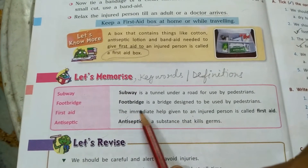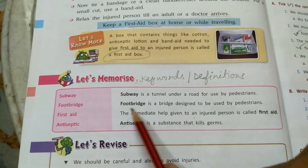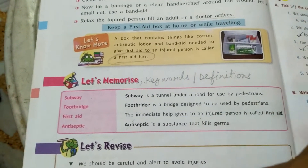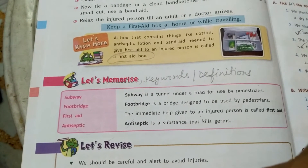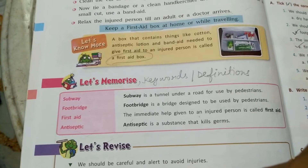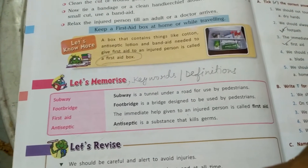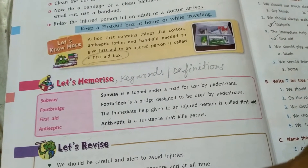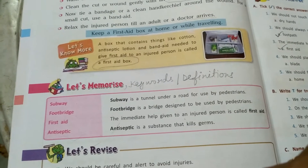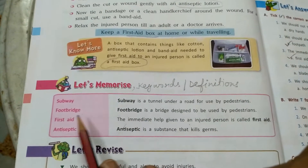Next is foot bridge. A foot bridge is a bridge designed to be used by pedestrians. Where there are very broad and busy roads, a foot bridge is made so that pedestrians can cross the road easily without waiting for vehicles to pass. It goes from one side of the road to the other, above the road.